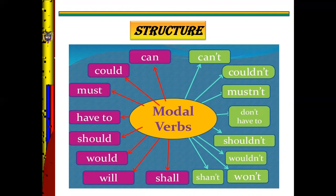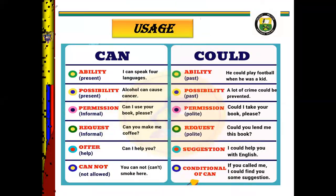The usage of modal verbs — attention: CAN and COULD. Can expresses ability, possibility, permission, request, offer, and cannot. Could expresses ability in the past, possibility in the past, permission in the impolite form, request in the impolite form, suggestions, and the conditional of can.